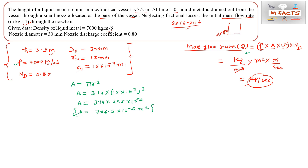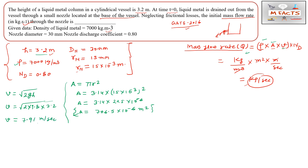At t = 0, the velocity of the liquid leaving the nozzle is given by Torricelli's theorem: v = √(2gh). So v = √(2 × 9.8 × 3.2), which gives a velocity of 7.91 meters per second.